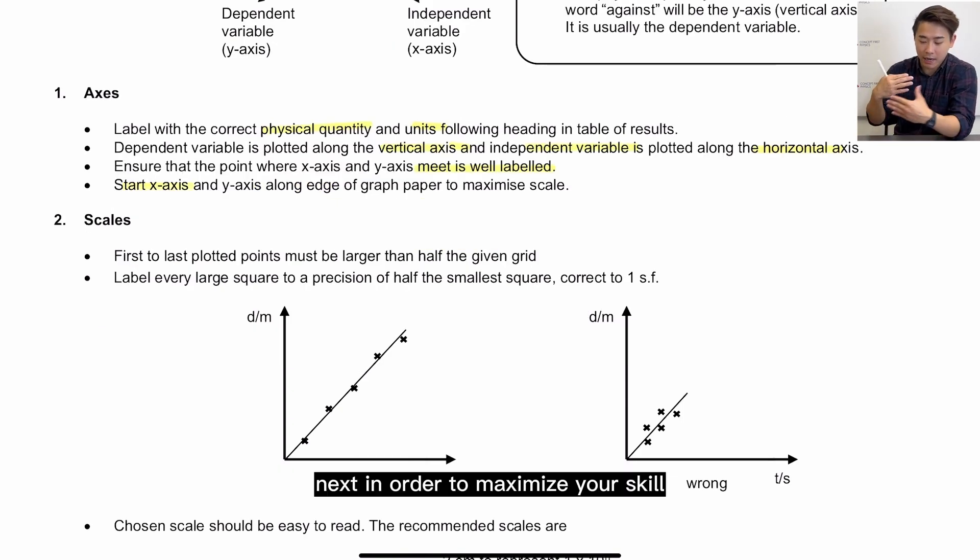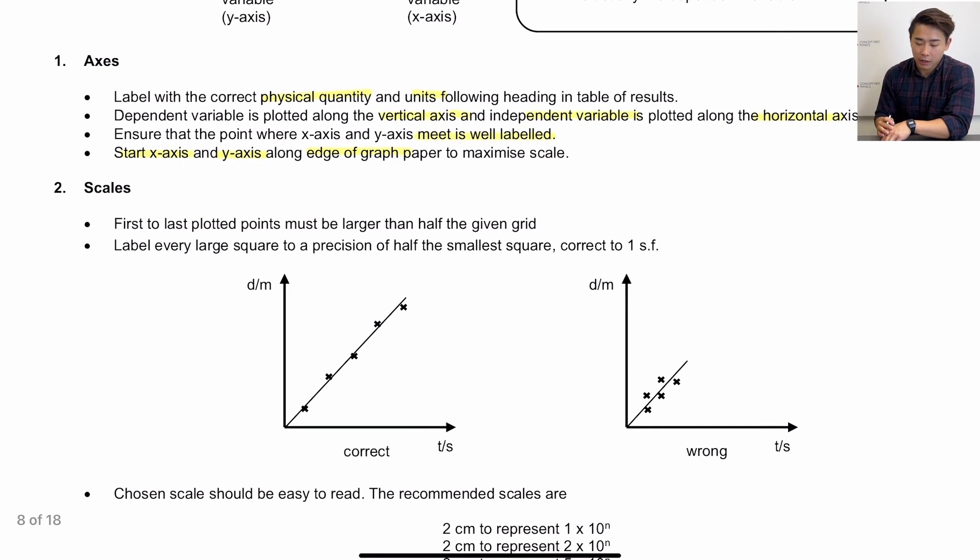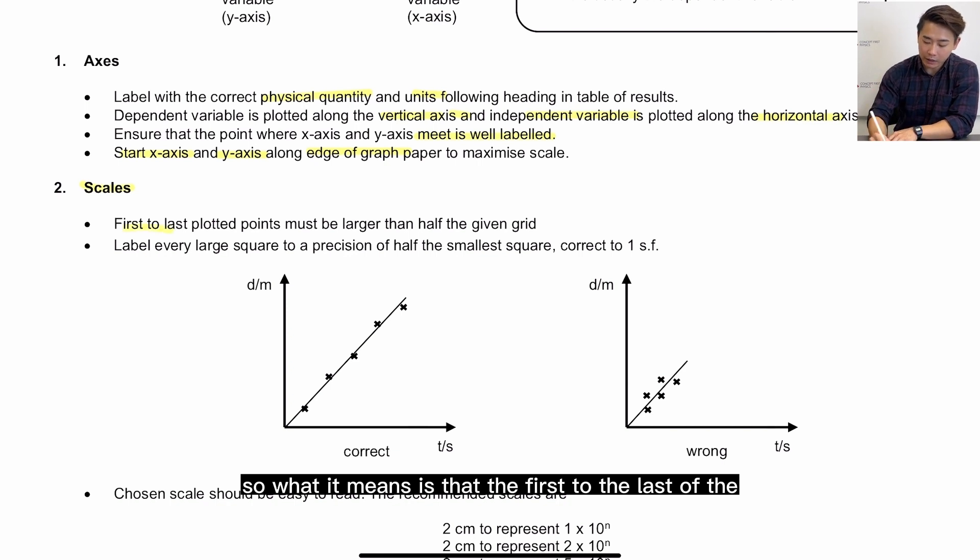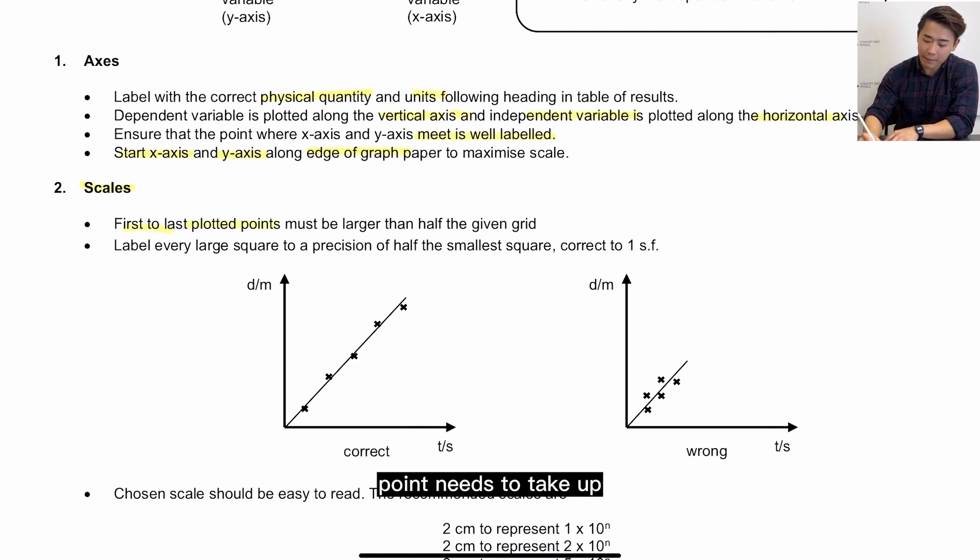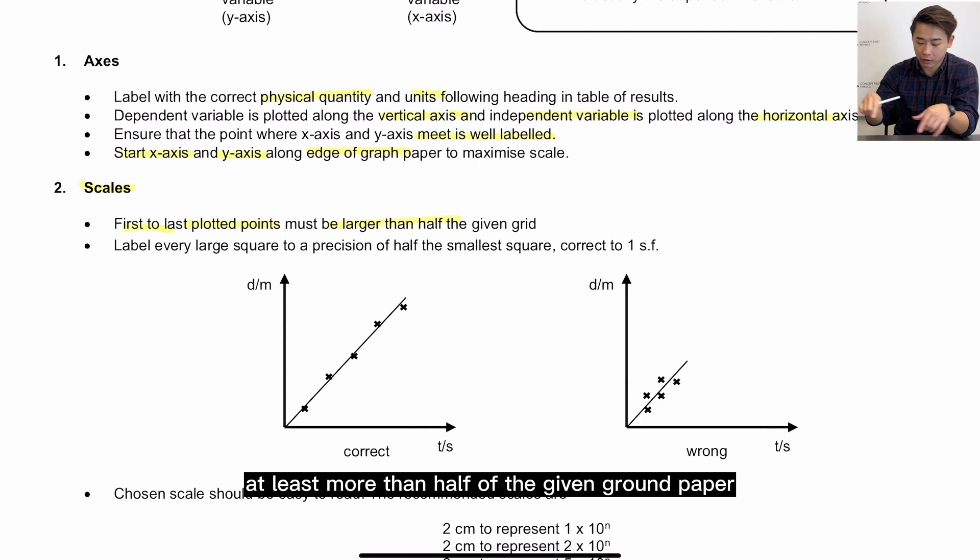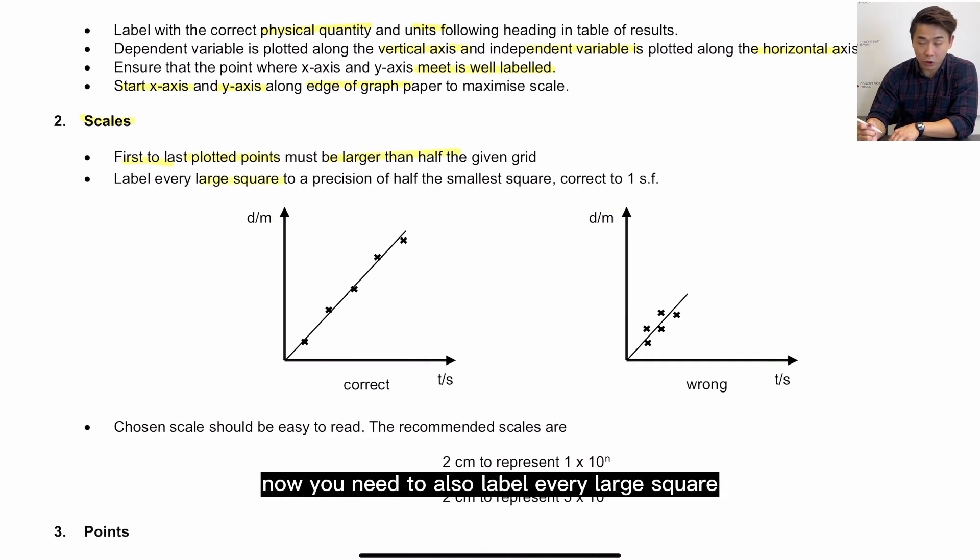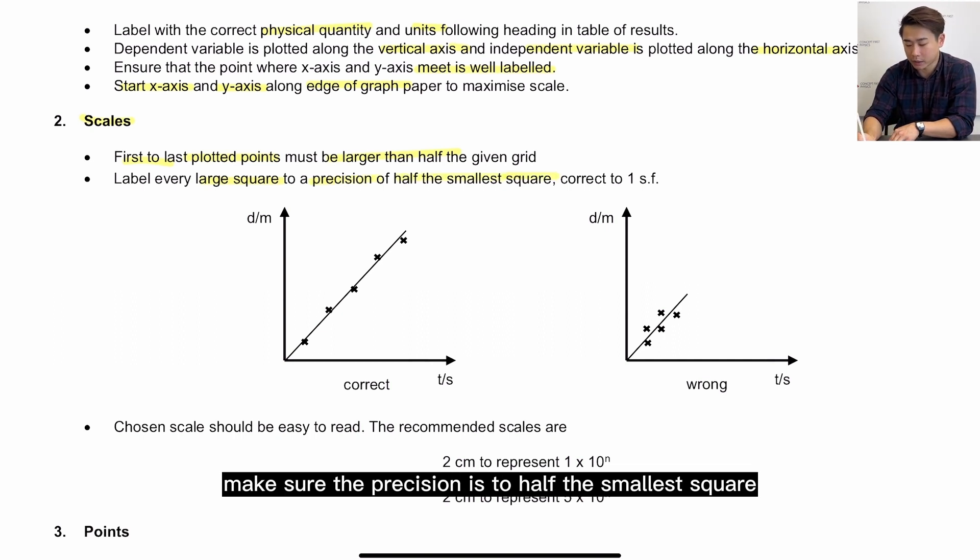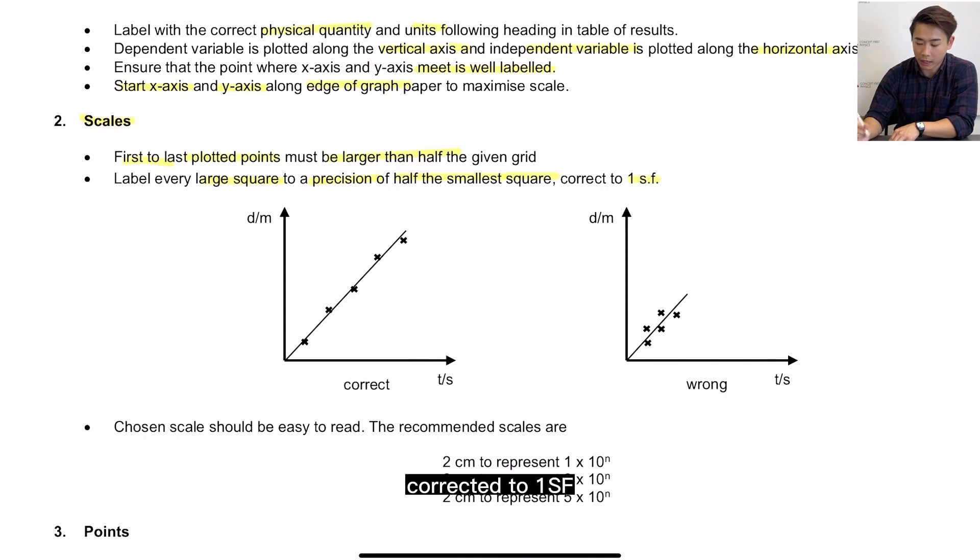Next, in order to maximize your scale, you have to start the x and y axis along the edge of the graph paper. S stands for scale. So what it means is that the first to the last of the point needs to take up at least more than half of the given graph paper. Now you need to also label every large square, and when you label the large square, make sure the precision is to half the smallest square, correct it to 1SF.